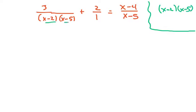It has to be both of these. So we're going to multiply both sides of the equation, or this whole thing, by x minus 2 times x minus 5.